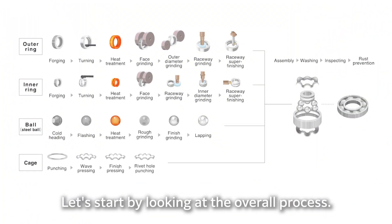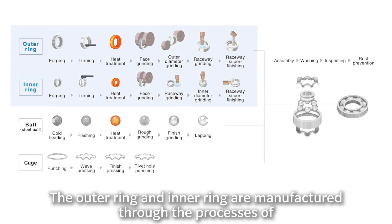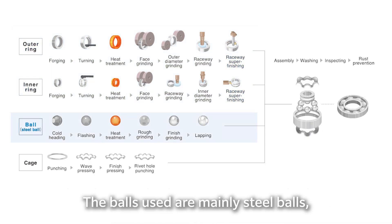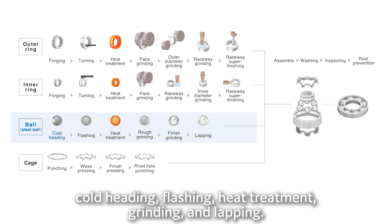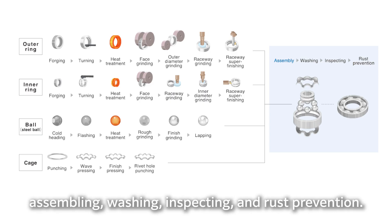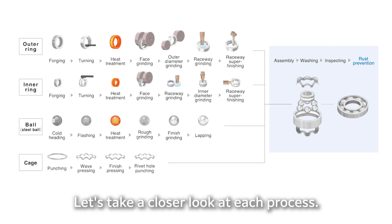The outer ring and inner ring are manufactured through the processes of forging, turning, heat treatment, grinding, and raceway super finishing. The balls used are mainly steel balls, manufactured through the processes of cold heading, flashing, heat treatment, grinding, and lapping. The cage is manufactured through the processes of punching, wave pressing, finish pressing, and rivet hole punching. The bearings are then completed with assembling, washing, inspecting, and rust prevention.